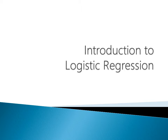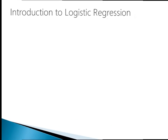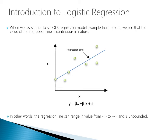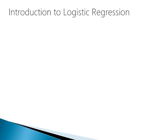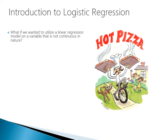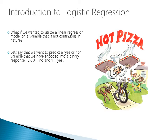Now we're going to shift gears and move into the topic of logistic regression. When we revisit the classic OLS regression model, we see that the value of the regression line is continuous in nature. In other words, the regression line can range in value from negative infinity to positive infinity and is what we call unbounded. What if we wanted to utilize a linear regression model on a variable that is not continuous in nature? Let's say we want to predict a yes or no variable that we've encoded into a binary response — a zero represents no, and a one represents yes.